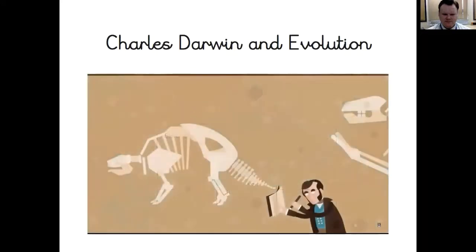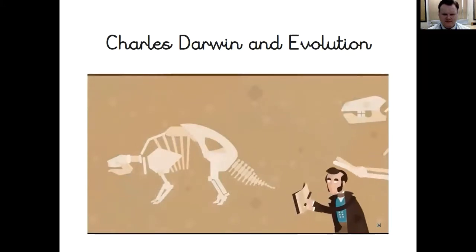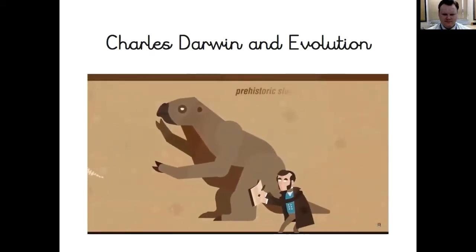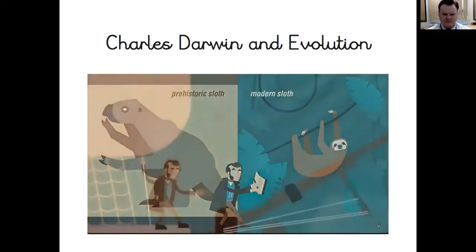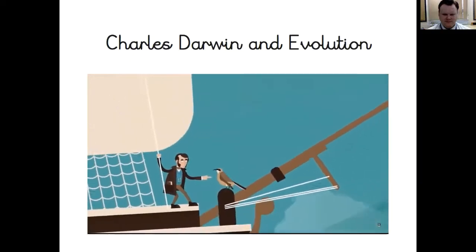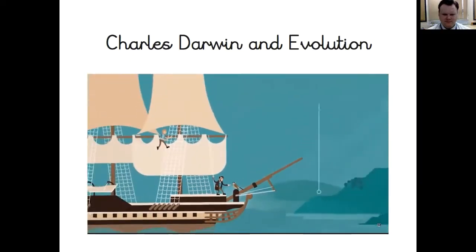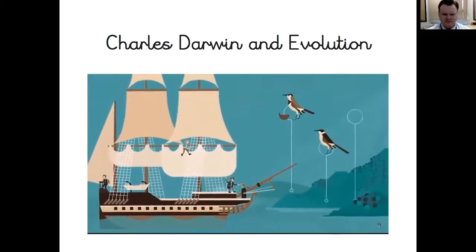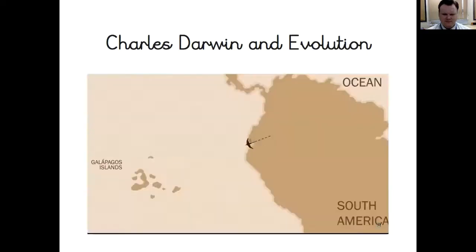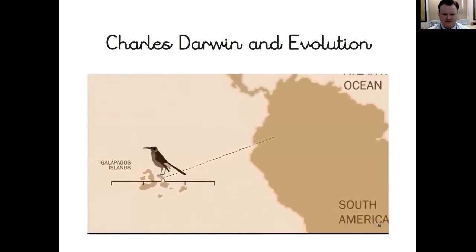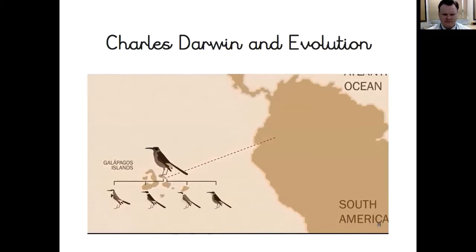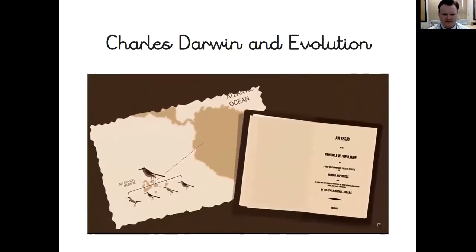In Argentina, Darwin found fossils of what looked like giant armadillos and sloths. Clearly these animals had existed at some point, but they didn't anymore. This made Darwin suspect that species had changed over time. He had also seen mockingbirds, and when he got to the Galapagos he found different mockingbird species on the islands — distinct from each other and from the mainland species. Because of their similarity and closeness, Darwin hypothesized they had a common ancestor.